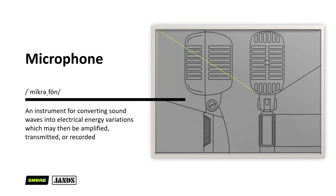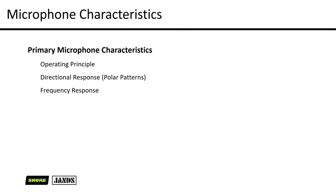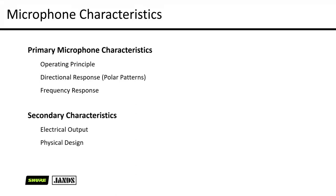When talking about microphones, there are a couple of things we need to cover. The primary microphone characteristics are the operating principle, the directional response, and the frequency response. It's also worth noting the secondary characteristics — the electrical output, meaning how it's able to transmit and capture information, and then the physical device as well. We're going to primarily focus on those top three.